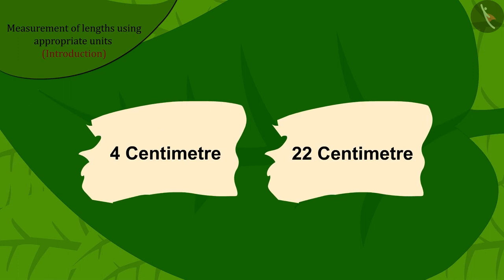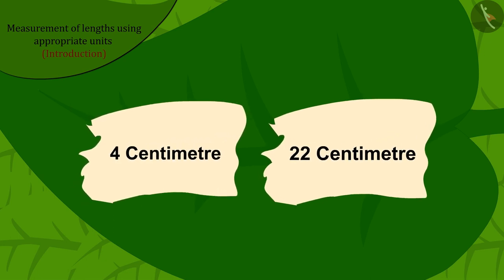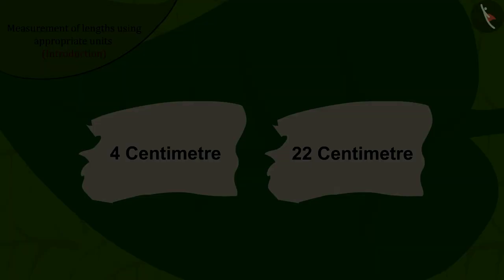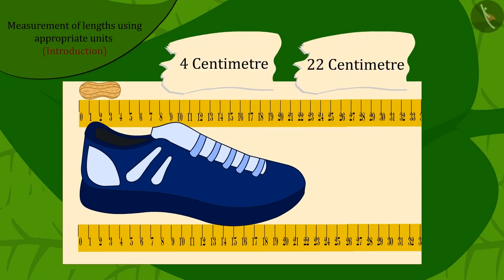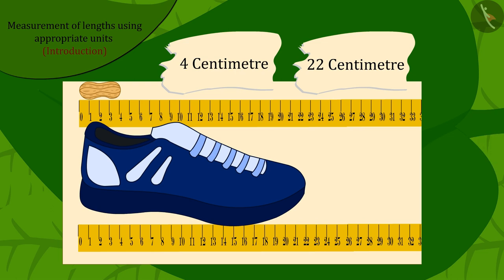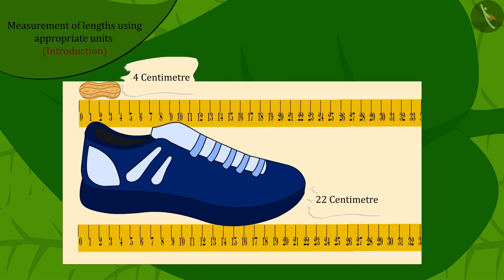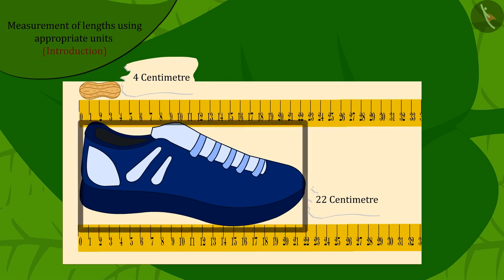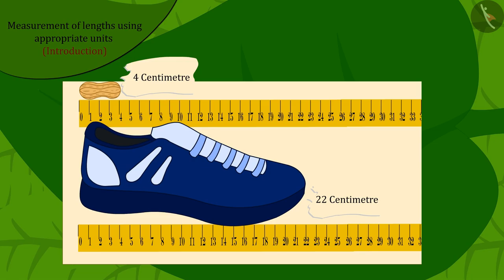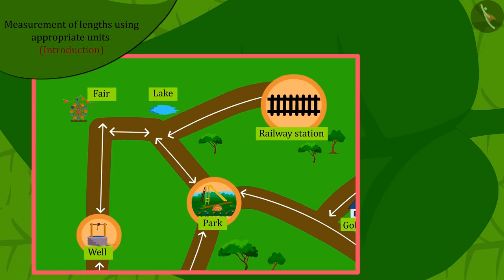Chanda found two more pieces of paper with four centimeter and 22 centimeter written on them. Can you match the length of the remaining two objects with their correct lengths? Well done! The length of the peanut is much smaller than that of the shoe, so the peanut's length is four centimeter and the shoe's length is 22 centimeter.